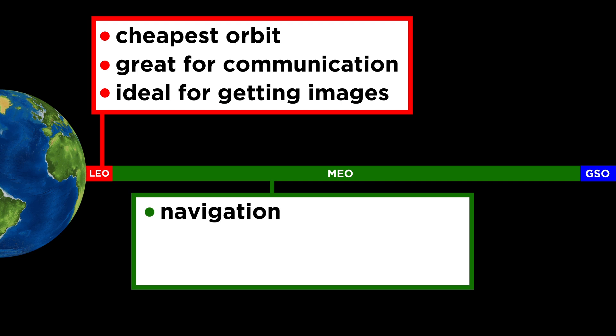Medium Earth orbit satellites are typically used for navigation, communication, and observation.